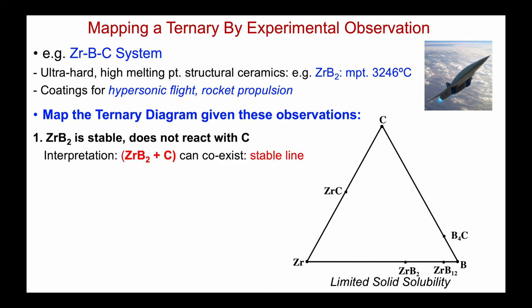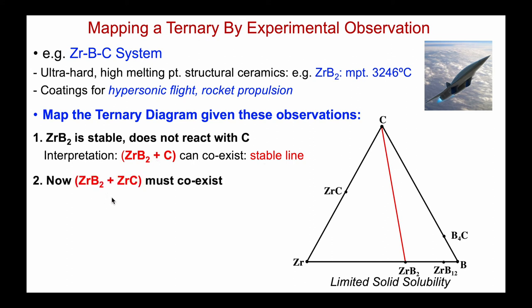Therefore, from a phase diagram point of view, these two must form a stable Alkemade line in the phase diagram. If that's the case, on the left side of the diagram we can see we need to break things down into two more sub-triangles. There must be a tie line between ZrC and ZrB₂, because that's the only way to split it up into two smaller triangles where three phases coexist. So let's put it in.